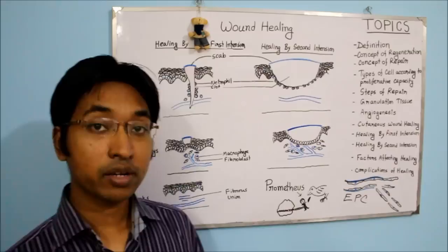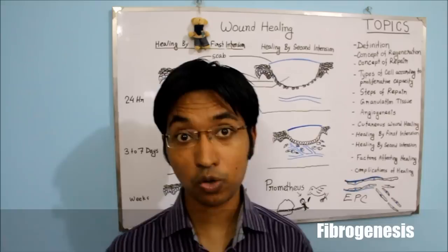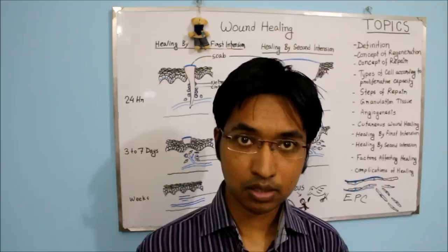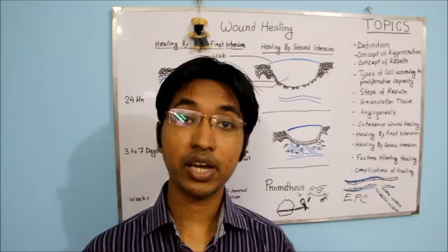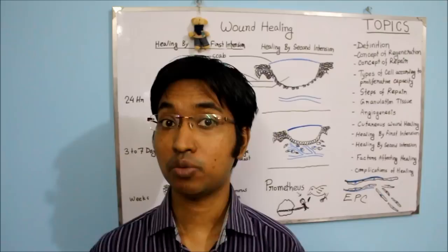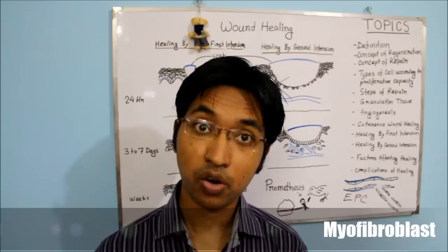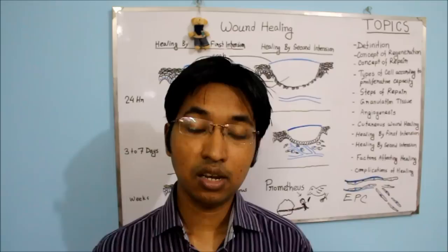These new blood vessels are not floating in thin air — they are surrounded by amorphous ground substance and matrix, with fibrosis and fibroblasts around them. Fibroblasts may derive from fibrocytes or from mitosis of pre-existing fibroblasts. Also present are myofibroblasts, which have characteristics intermediate between fibroblasts and smooth muscle. These are the events occurring during fibrogenesis.